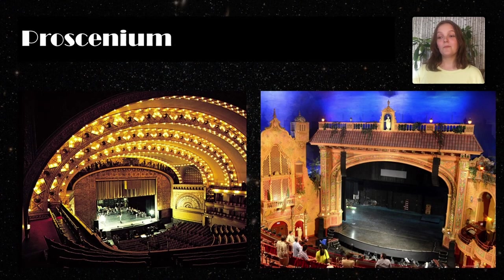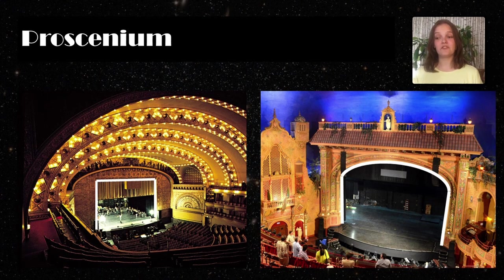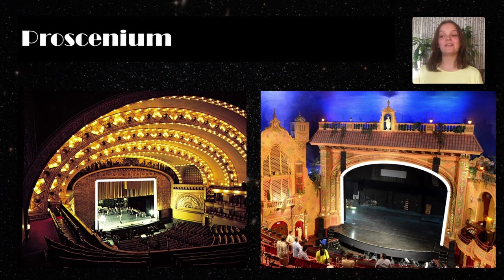Proscenium. The most frequent theatrical layout is a proscenium theatre, named by the proscenium arc which frames the stage like a picture frame. Proscenium means 'in front of the stage,' and a proscenium arc forms a window surrounding the scenery and actors, providing a nice perspective for the audience.